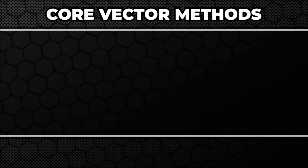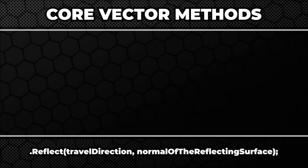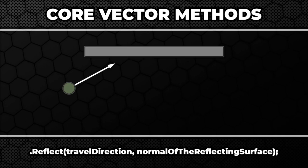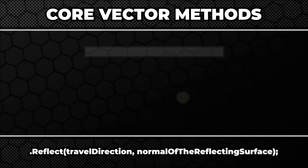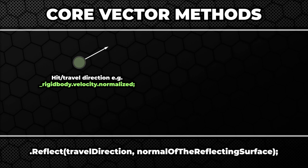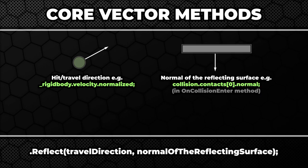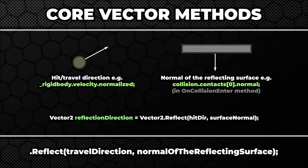Now it's time for a very interesting method: Reflect. Imagine you have a very bouncy bullet traveling towards a wall, and you would like to know in what direction the bullet will be traveling after hitting the wall. That's what the reflect method can be used for. It expects two parameters: the initial direction in the form of a vector, and the normal of the reflecting surface, and of course returns the vector pointing in the new direction.